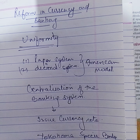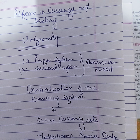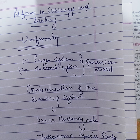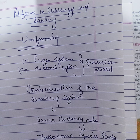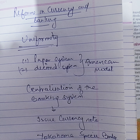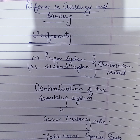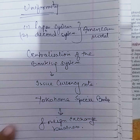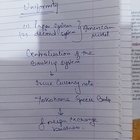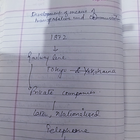The growth of Japanese commerce and industry was followed by reform of the currency and banking system. The old feudal character of Japanese currencies was abandoned and completely reorganized to bring about uniformity. Paper currency and the decimal system were introduced on the American model. The establishment of the Bank of Japan resulted in the centralization of the banking system — the Bank of Japan alone was authorized to issue currency notes. This was followed by the establishment of the Yokohama Specie Bank, which mainly dealt with foreign exchange business.